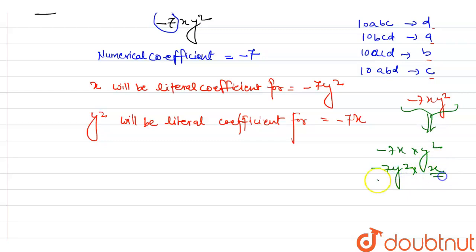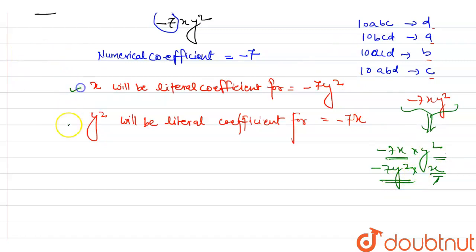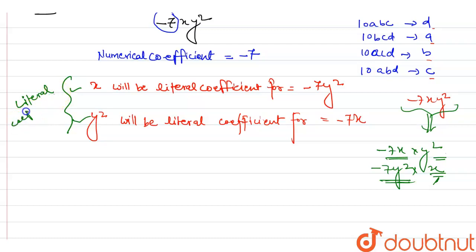So for minus 7y square, 'x' will be the coefficient, and for minus 7x, 'y square' will be the coefficient. And both x and y square are literal coefficients.